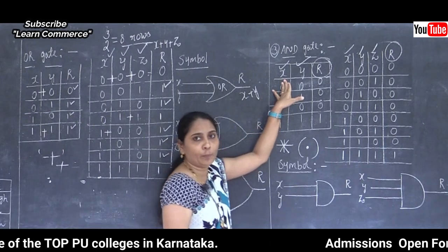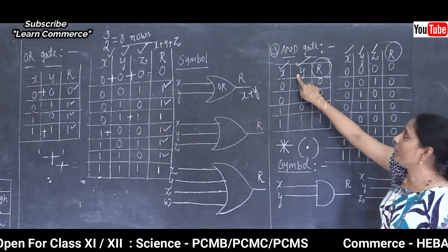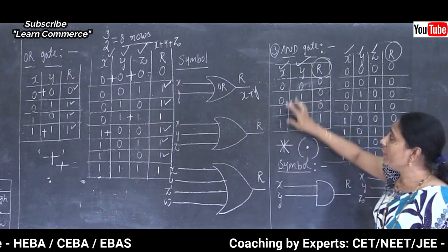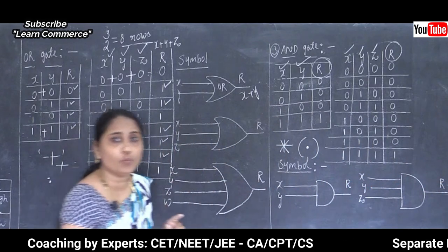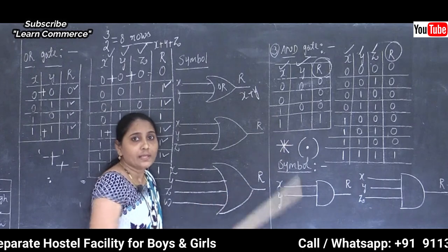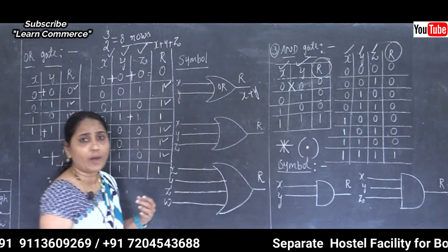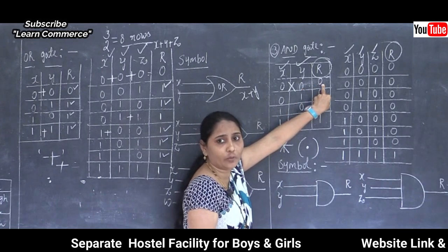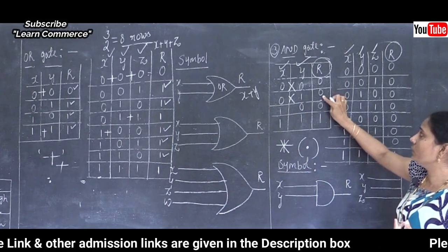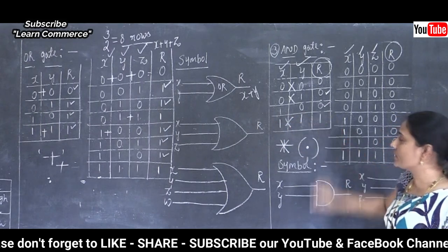For two-input AND gate with variables X and Y: column values X = 2-0-2-1, Y = 0-1-0-1. Result by multiplication: 0·0=0, 0·1=0, 1·0=0, 1·1=1. So the AND gate output is 1 only when both inputs are 1.